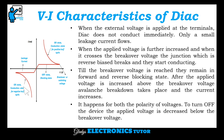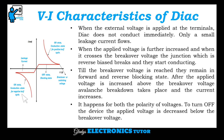This is the VI characteristics of DIARC. When external voltage is applied at the terminals, DIARC does not conduct immediately — only a small leakage current flows. This is the off state or blocking state in both directions, that is forward and reverse biased condition. When the applied voltage is further increased and crosses the breakover voltage, the reverse-biased junction breaks and they start conducting. When the applied voltage is above the breakover voltage, it starts conducting in both directions.